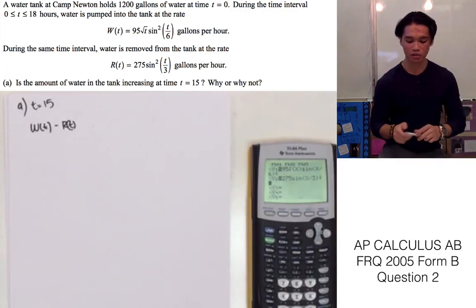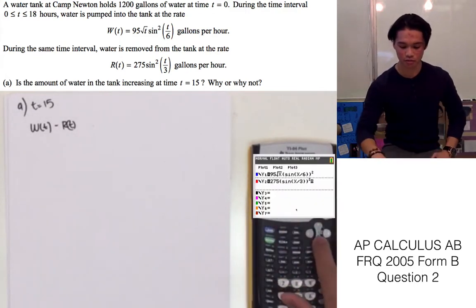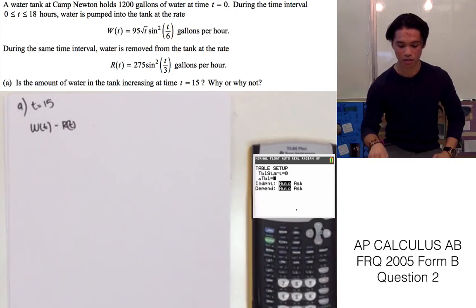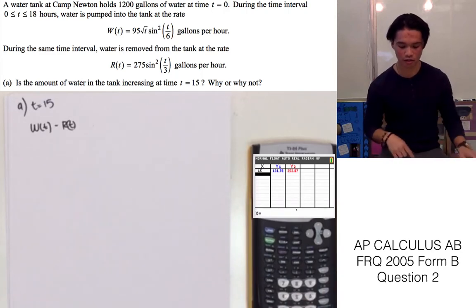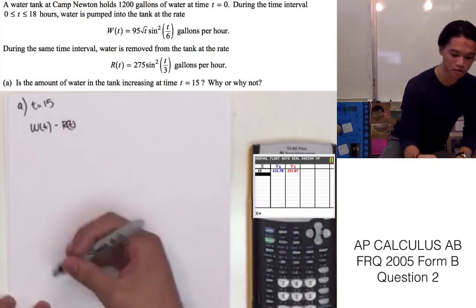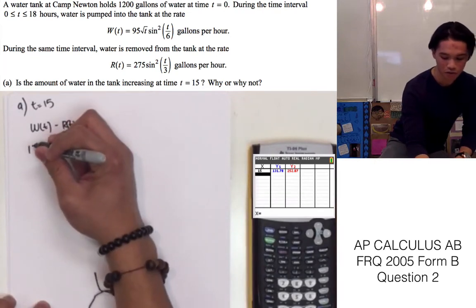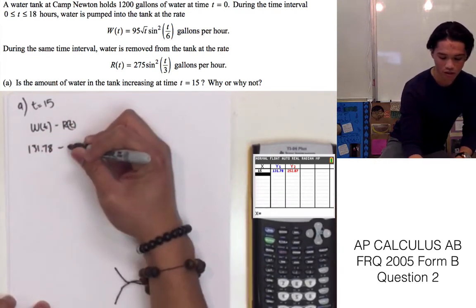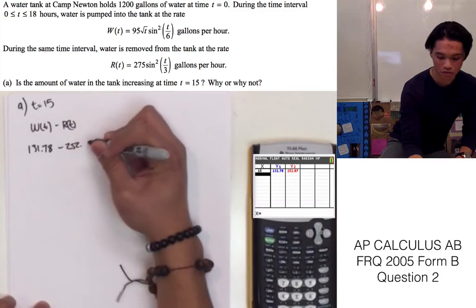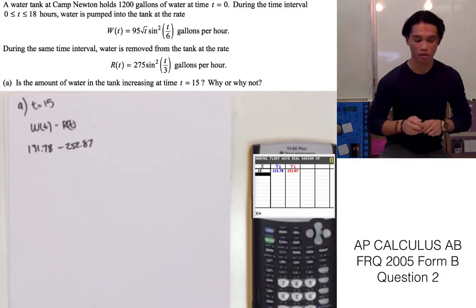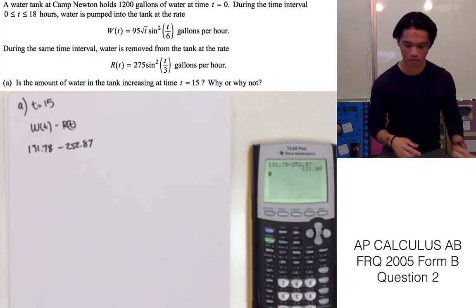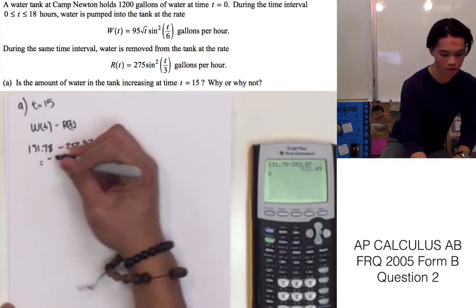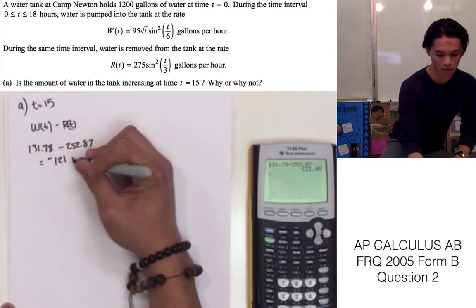Now we can go to our calculator — second window, make sure it's on ask, and second graph — and input the value of 15. We will get our values. So at W of 15, we have 131.78, and R of t is 252.87. From here we will go ahead and simplify that, and we have negative 121.09.